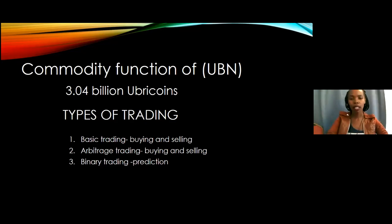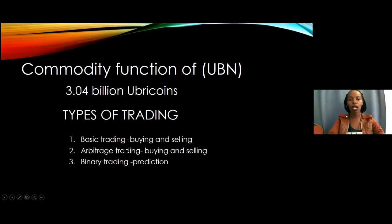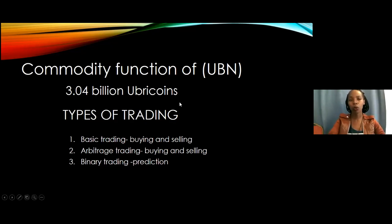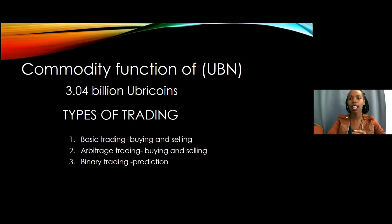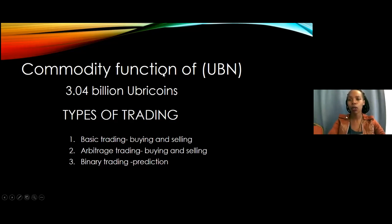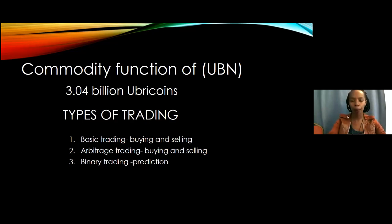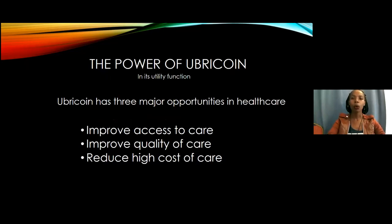To make sure that the price of Ubicoin is up, we need a lot of holders of Ubicoin. In the commodity function of Ubicoin, we set aside 3.04 billion Ubicoins that will be used in facilitating the commodity function — basically going to exchanges, buying and selling Ubicoin, and making sure that the price of Ubicoin is going up.